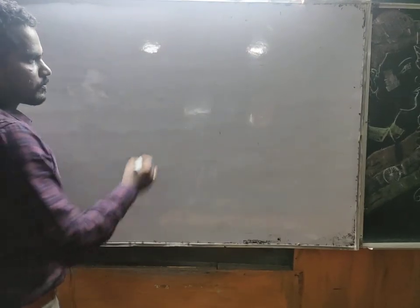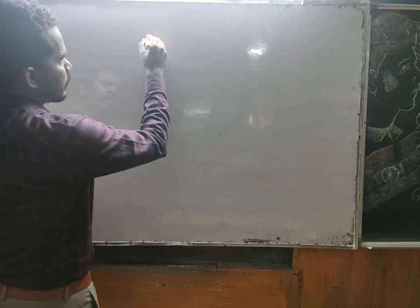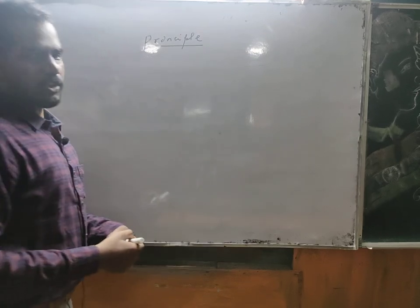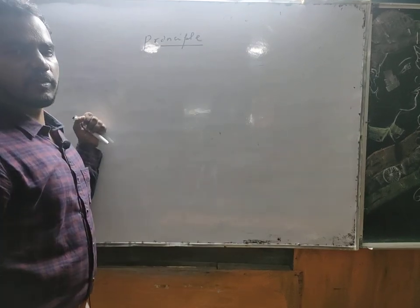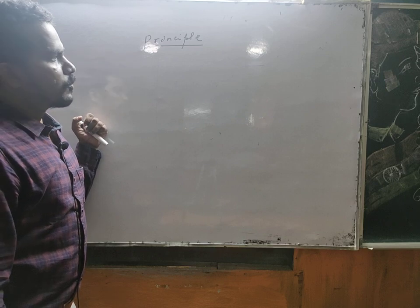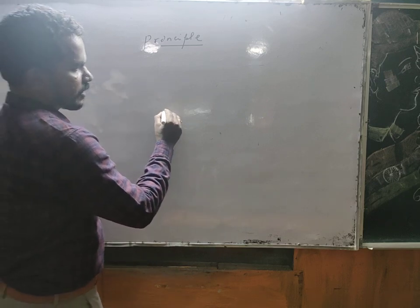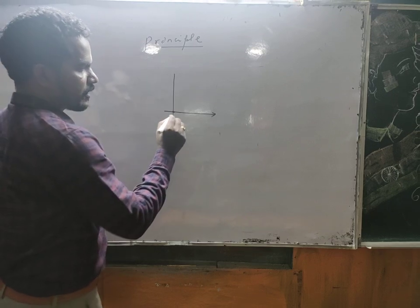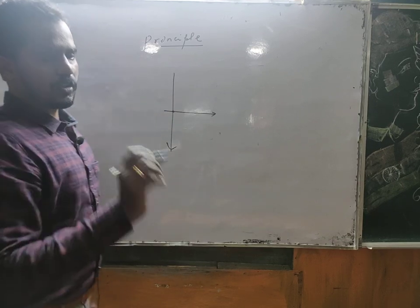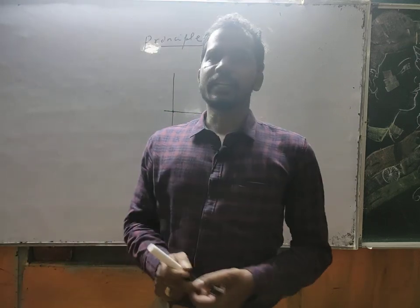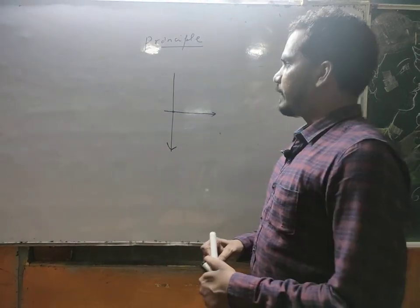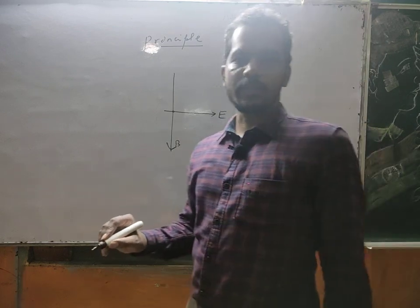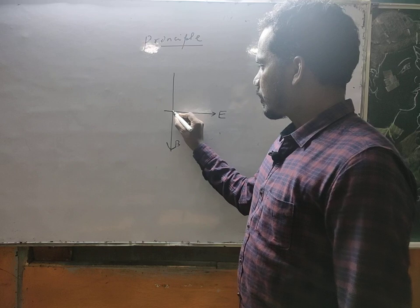Now the construction — the principle of the cyclotron. The first key element is the electric field and the magnetic field. Both are perpendicular to each other. You can see the electric field and then the magnetic field. The charge particle experiences the Lorentz force — the magnetic force is velocity-dependent, while the electrical force is velocity-independent. The fields are perpendicular.